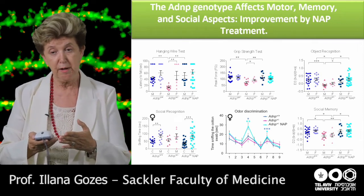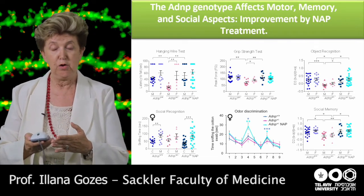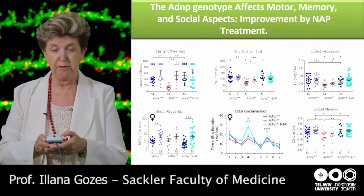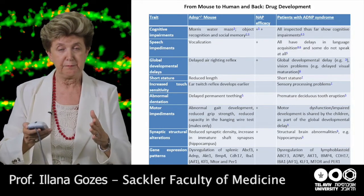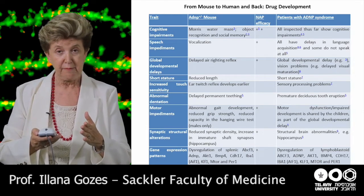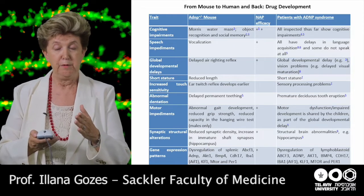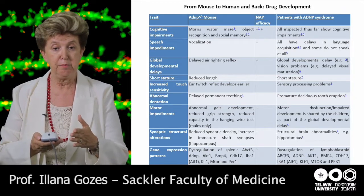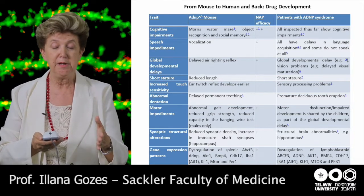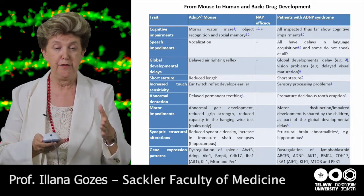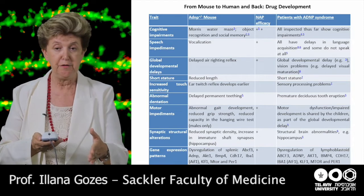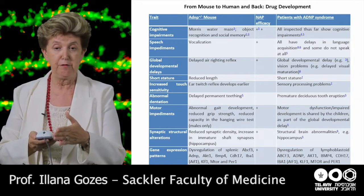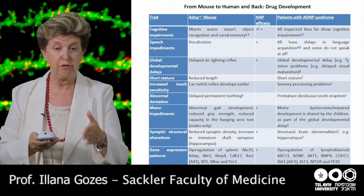Taking the whole story together, in every test we performed we saw an impairment. When we see an impairment in the children, we also see an impairment in the mouse, and in many cases this is corrected by NAP treatment. The bottom row of this table shows specific genes that changed in the spleen of the mice as a consequence of ADNP haploinsufficiency. These same genes were changed as a consequence of ADNP mutations in lymphoblastoid cells derived from patients, and in the animals we corrected it by NAP treatment.